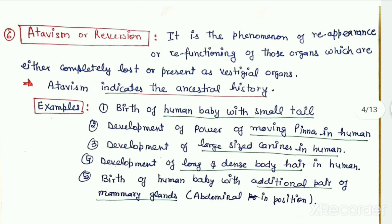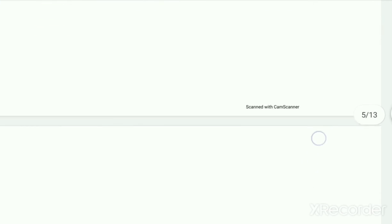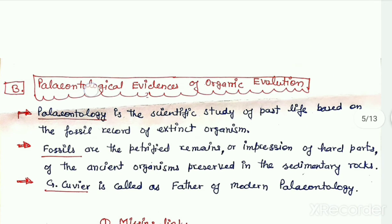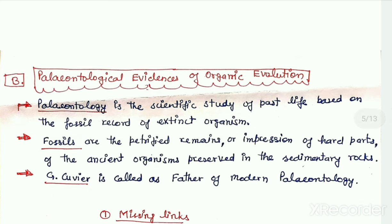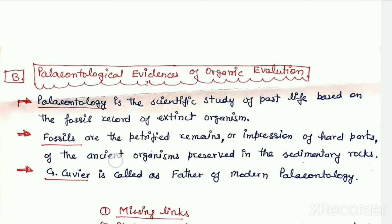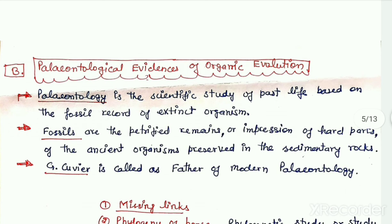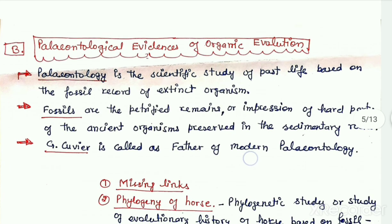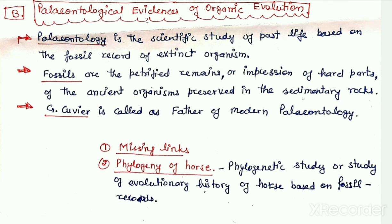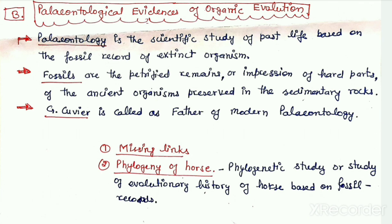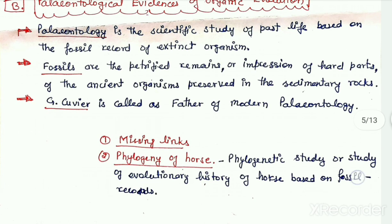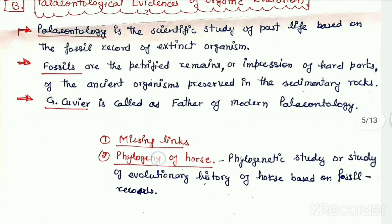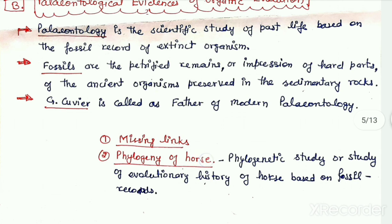There are a few other examples of atavism in human beings. The next category of evidences of organic evolution is the paleontological evidences, which are actually evidences based on the study of fossils. Fossils are the remains or impressions of ancient organisms preserved in sedimentary rocks, and paleontology is the study of fossils. In this category we will study two types of evidences: first, the missing links which we have already covered, and second, the phylogenetic study or evolutionary history of organisms based on fossil records, in which we will study the phylogeny of the horse in detail later.